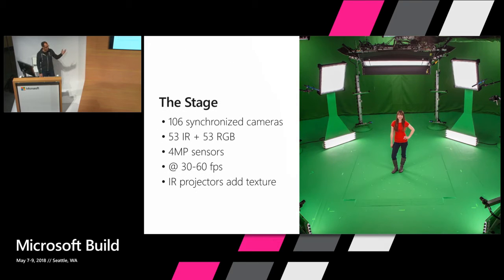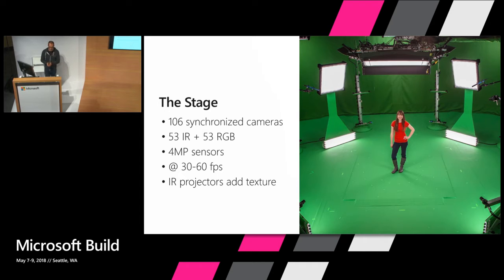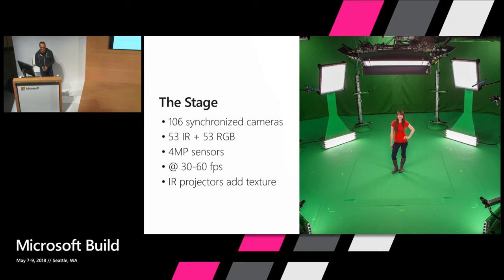Here's a picture of our Redmond stage. There's also a stage in San Francisco — that's where I'm from. There's also a partner stage: our partners Dimension Studios in London have a stage, and we're opening another stage soon in L.A. A stage consists of 106 synchronized cameras — that's 53 IR and 53 RGB cameras. They are arranged into stereo pairs, each with 4-megapixel sensors, and they typically capture at 30 frames per second, although for just twice the processing time and twice the storage we can capture at 60.